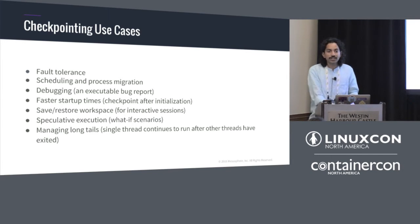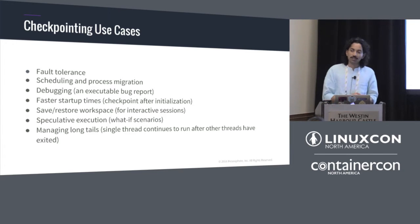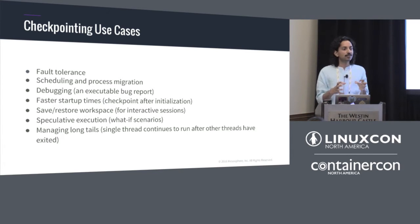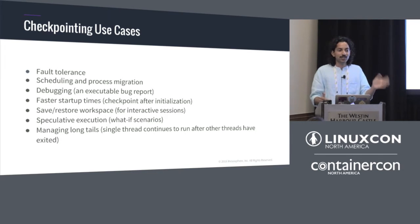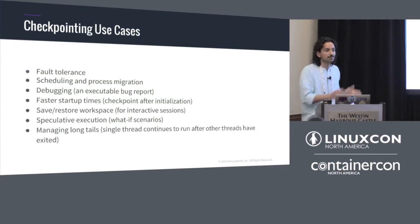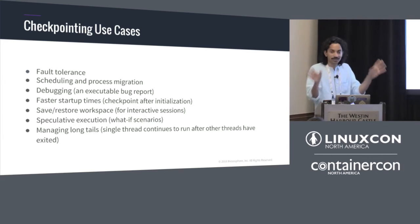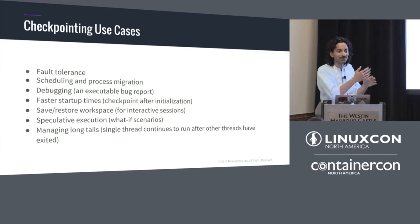Scheduling and process migration we already talked about. Debugging is also a very interesting use case — think of the checkpoint image as your ultimate bug report. You have your program running, taking frequent checkpoints, and when it fails, you take the previous checkpoint and send it to the developers. They'll restart from that checkpoint, get back into exactly the same scenario, and eventually reproduce the bug — assuming no race conditions.